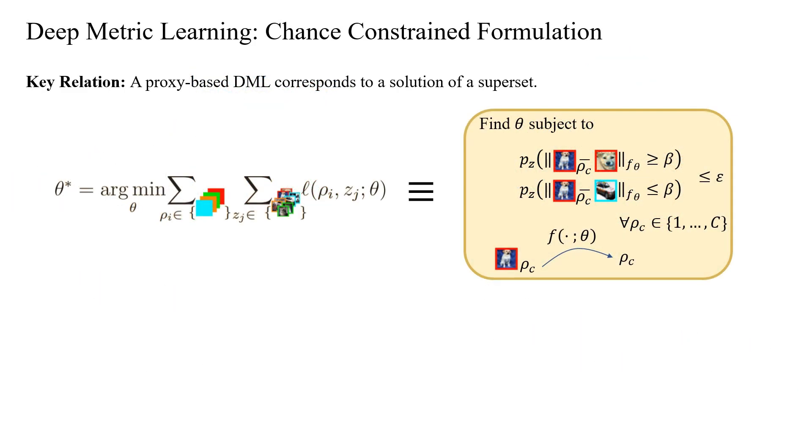Let's highlight a crucial insight. Proxy-based metric learning aligns with a solution to a chance constraint feasibility set, conditioned on specific anchor samples. Importantly, this problem serves as a relaxed version of our initial formulation.